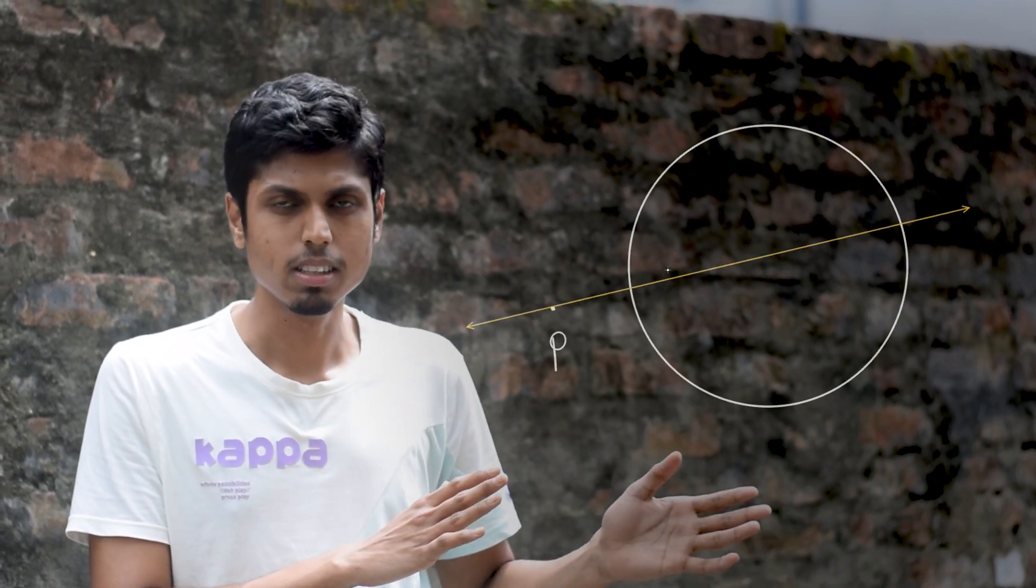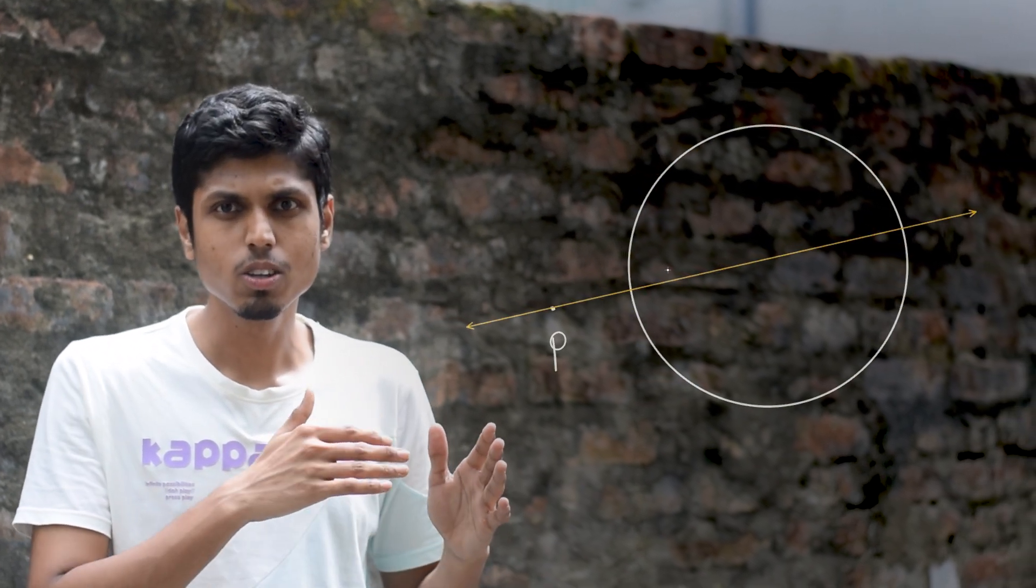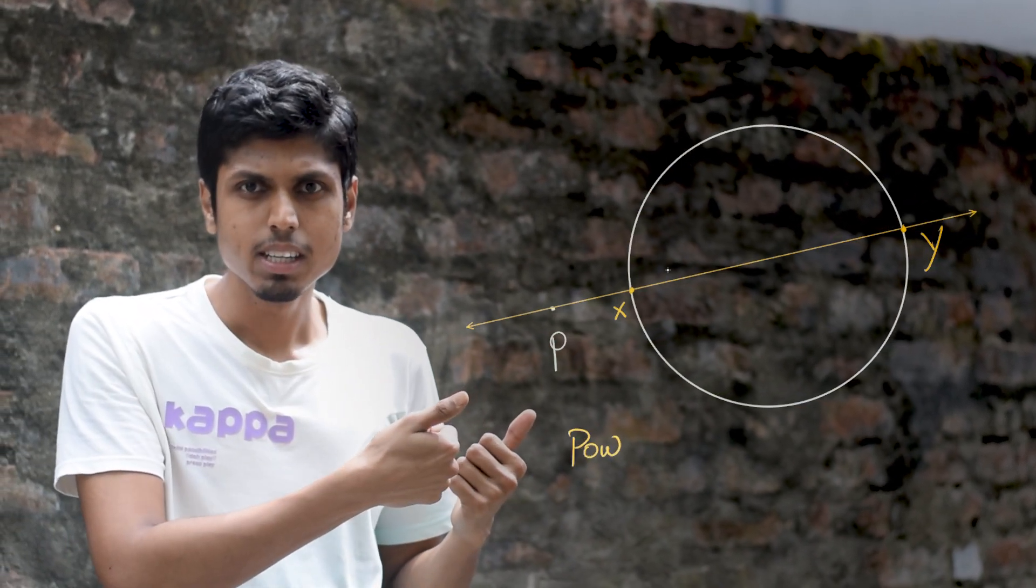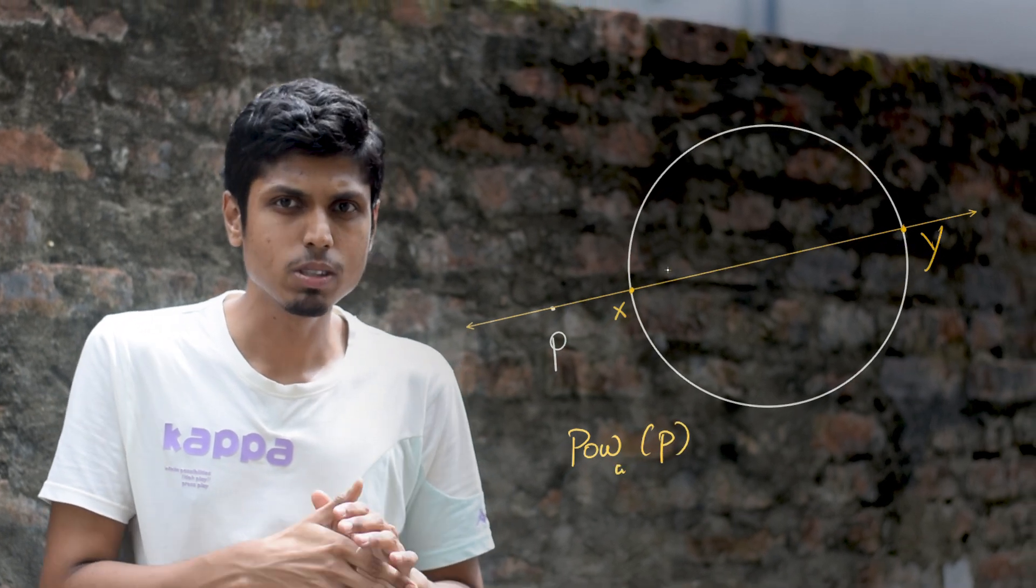It states something like this: Suppose you consider a circle and take a point either on the circle or inside the circle or outside the circle, and draw a line through that point so that it intersects the circle at two distinct points, namely x and y.